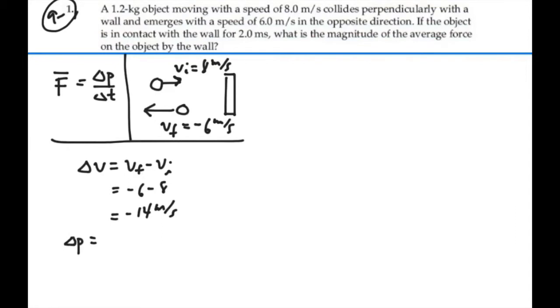which is the mass times the change in velocity, would be the mass, 1.2 kilograms, times a negative 14. And that will be negative 16.8 kilograms meters per second. Alright, so that's our change in momentum.